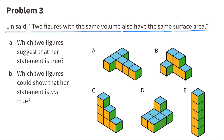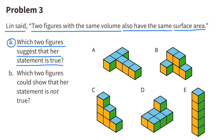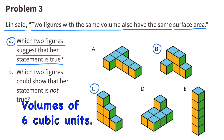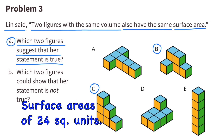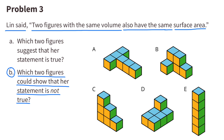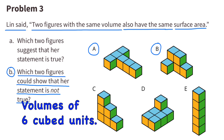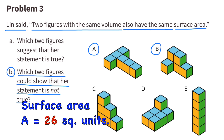Number 3: Lynn said two figures with the same volume also have the same surface area. A: which two figures suggest her statement is true? Figures B and C suggest the statement is true — both have volumes of 6 cubic units and surface areas of 24 square units. B: which two figures could show her statement is not true? Figures A and B show her statement is not true; they have the same volumes but different surface areas. Figure A has a surface area of 26 square units and figure B has 24 square units.